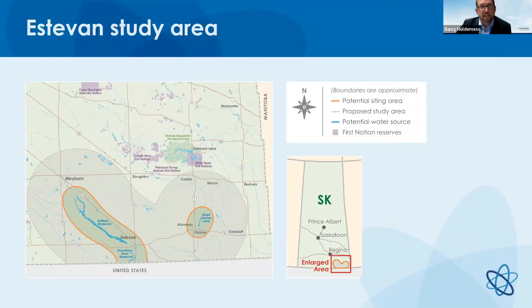The other study area is the Estevan area — again, you can see the potential siting area with the solid orange line, a 10-kilometer radius around Rafferty Reservoir, Boundary Dam Reservoir and Godwin Lake. Our study area here is a 30-kilometer radius around those areas.